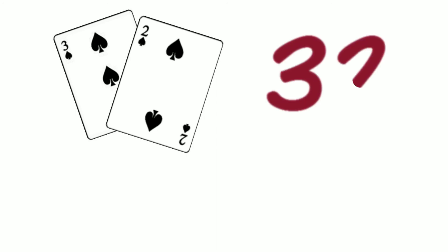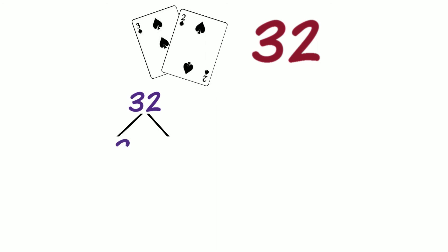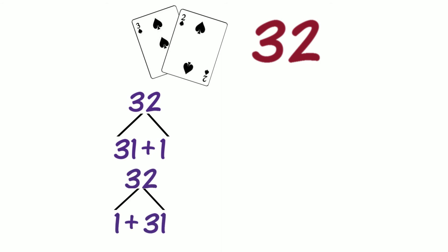Now let's work with two-digit numbers without blocks. Let's select cards to make a two-digit number. Did we make 32? How could we partition 32 into two parts that don't use place value? Could we partition 32 into 31 and 1? If the parts swap places, what other partition do we know? Do we know 1 and 31? Did we partition 32 into parts that don't use place value?